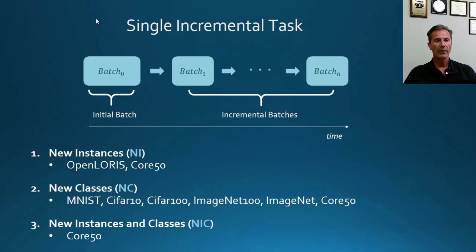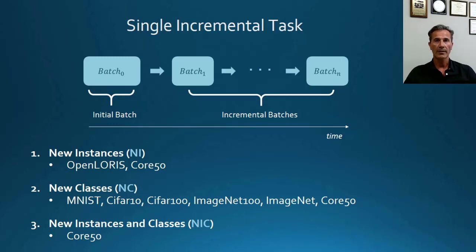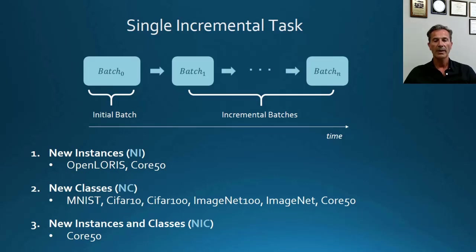In single incremental task, you have a first batch and a number of incremental batches. Depending on the content, we can have three cases: New Instances (NI), where incremental batches have only new instances of existing classes — this is the case of CORe50; New Classes (NC), also known as incremental class learning, where incremental batches contain only new classes — this includes MNIST, CIFAR-10, CIFAR-100, ImageNet; and New Instances and Classes (NIC), where incremental batches have both new instances of existing classes and new classes. There is a specific benchmark for this in Core50.